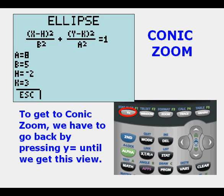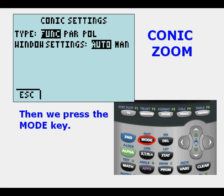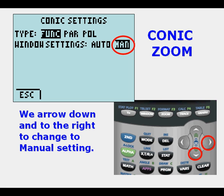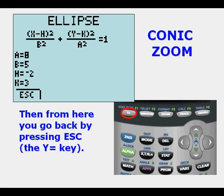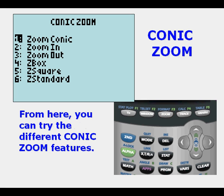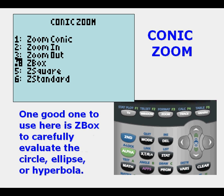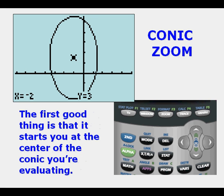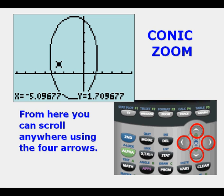To get conic zoom, we have to go back by pressing Y equals until we get this view. When we have this view, we can press the Mode key. In the Mode key, we go over and change to Manual setting. Then from here, we go back by pressing the Escape, that ESC on the left on the view screen, which is the Y equals key. We get this view. Then we can press the Zoom key to get the conic zoom menu. From here, you can try different conic zoom features. One good one to use here is Z Box or Zoom Box to carefully evaluate the circle, ellipse, or hyperbola. The first good thing is it starts you at the center of the conic you're evaluating. So you press Zoom Box.